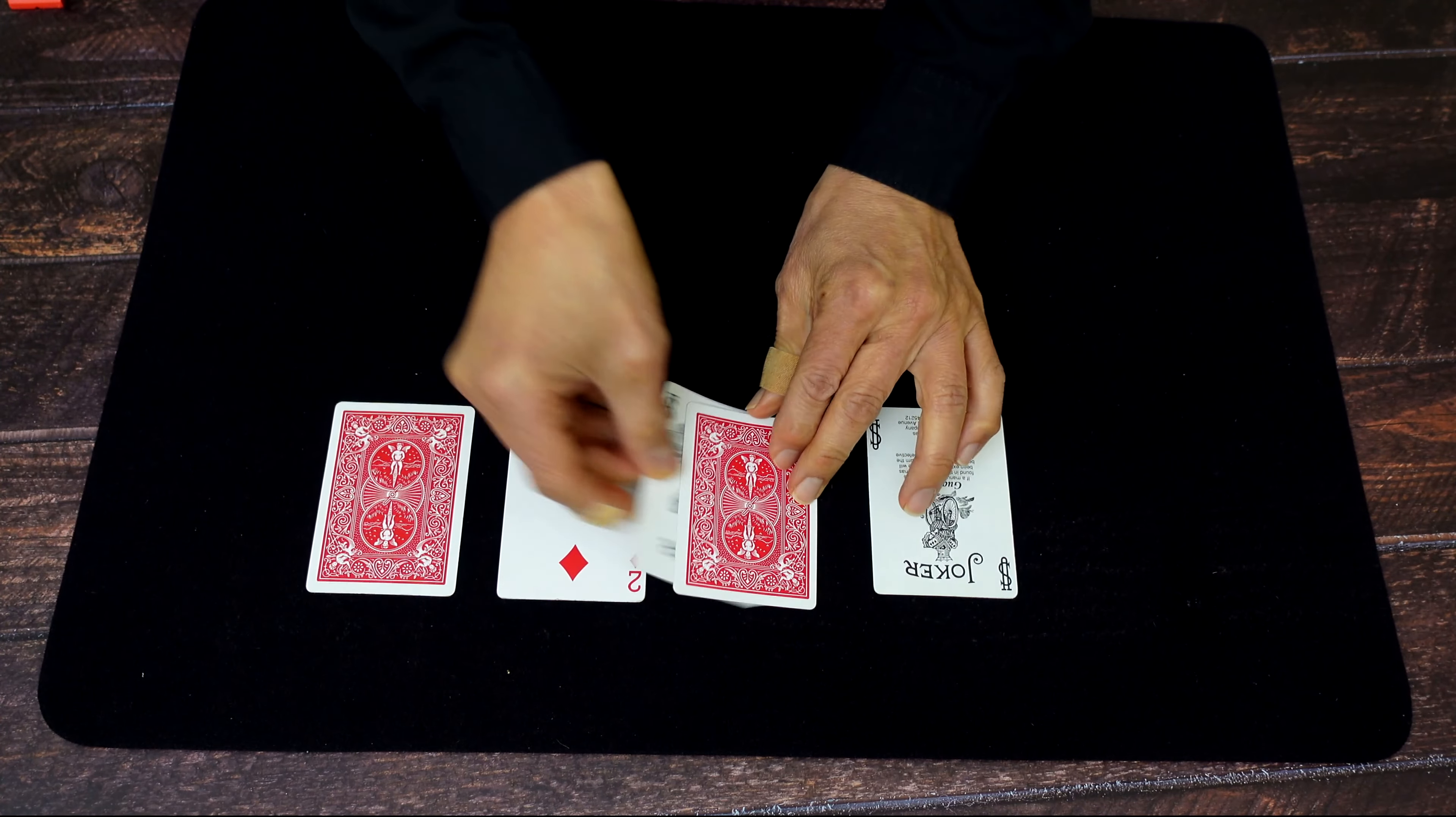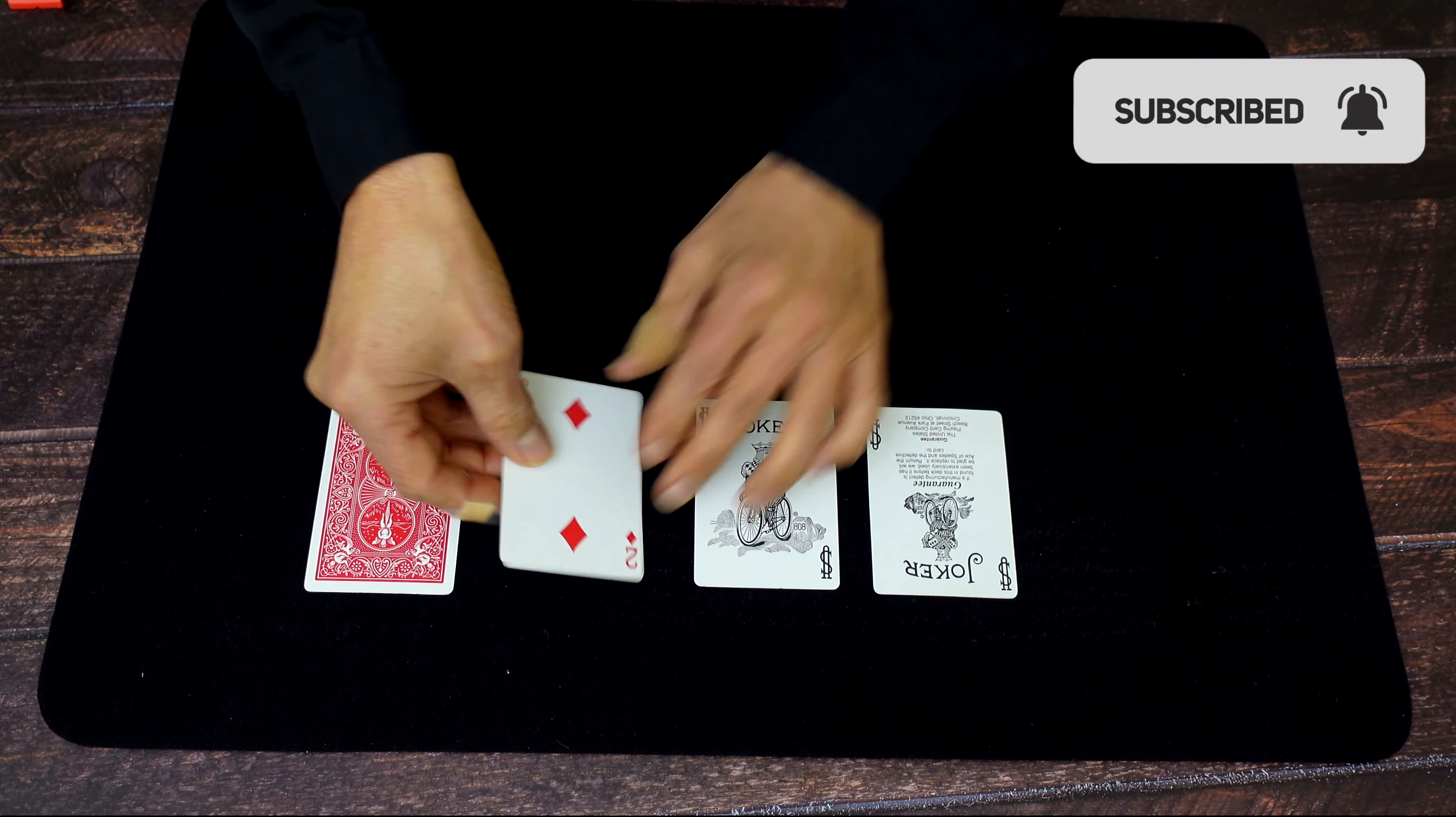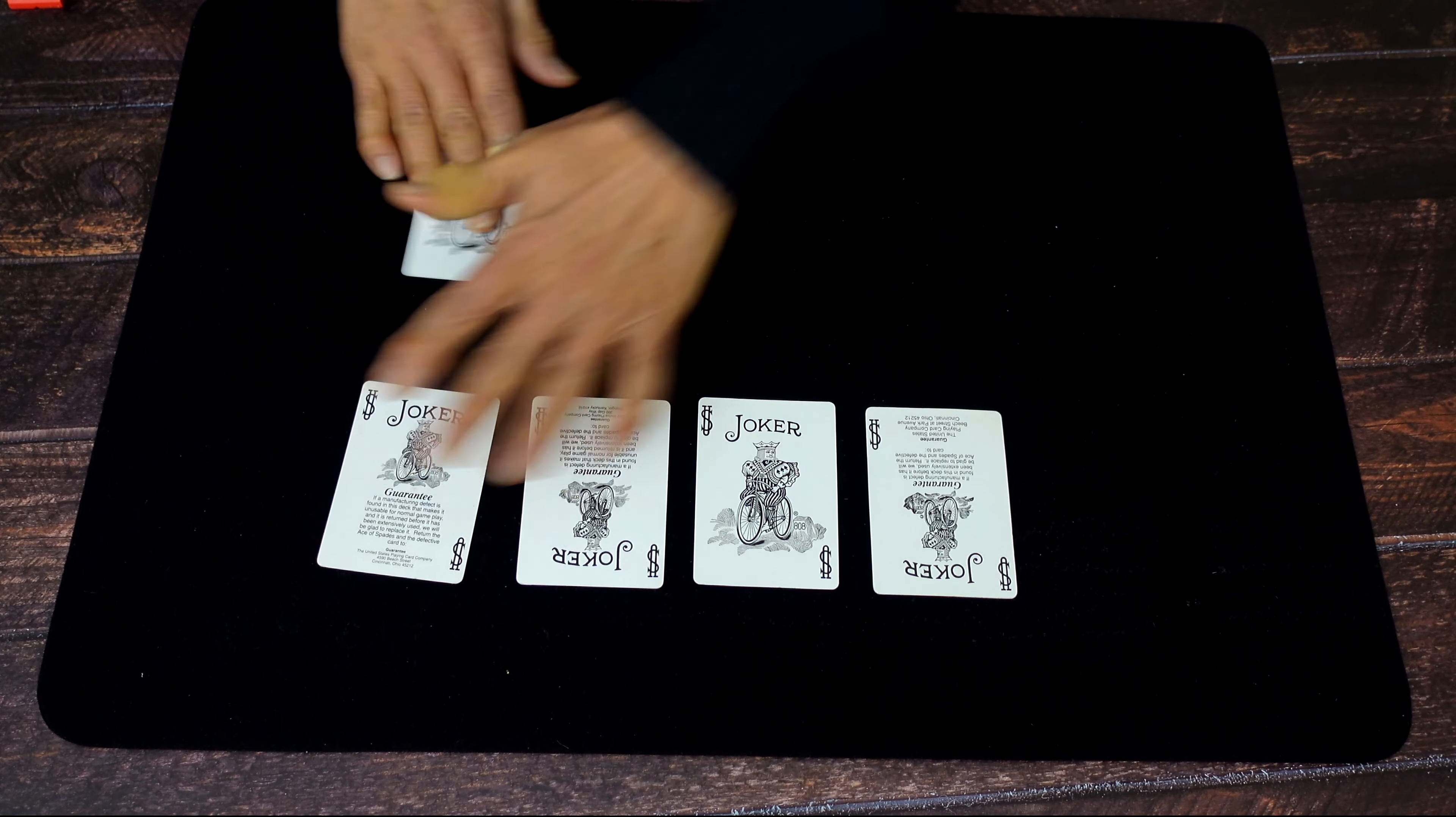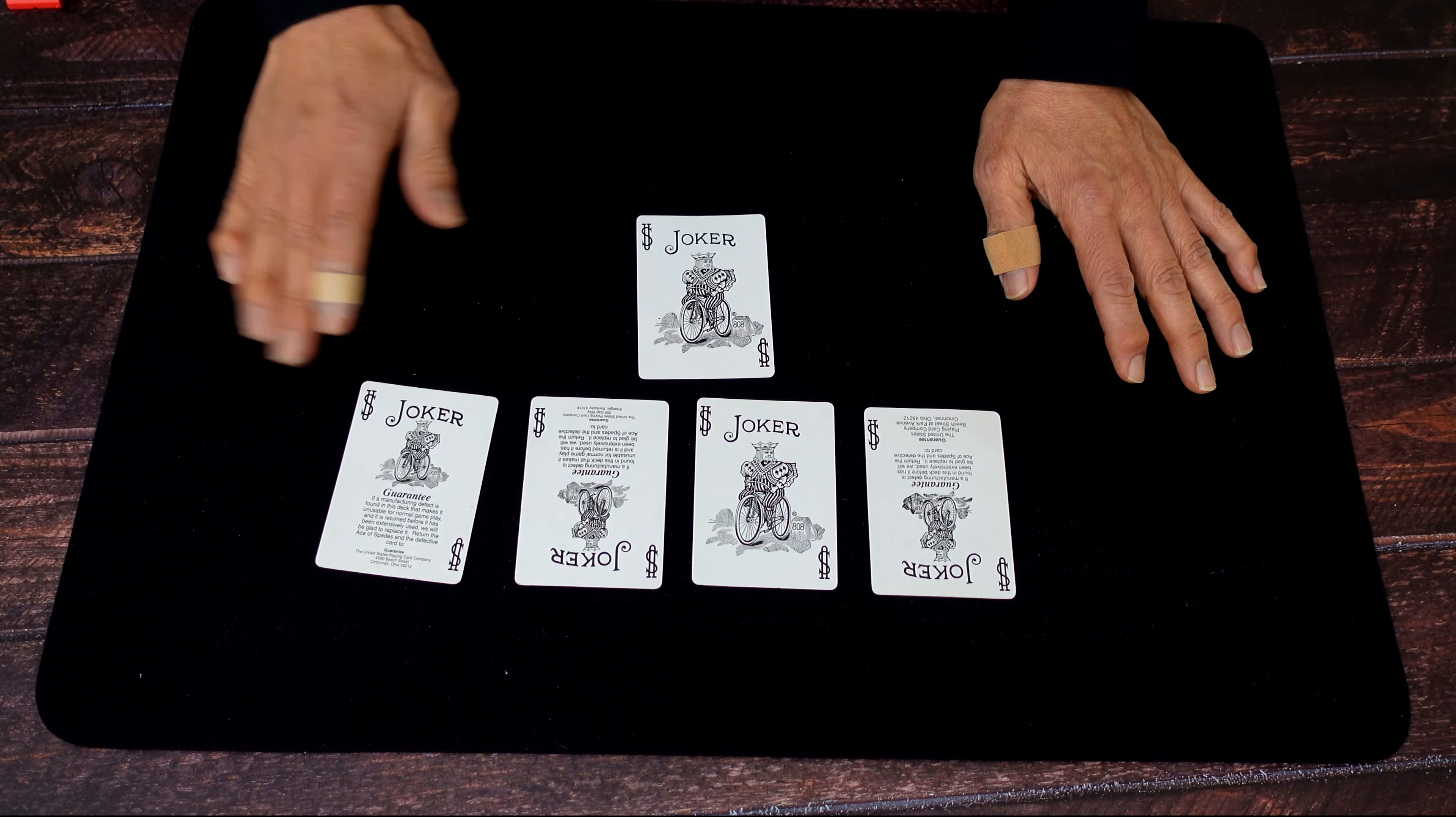Now this is just a regular card. You go under and turn it over and second Joker. This one's our gaff card, so you just place it under, turn it over, and one more, and you've turned apparently five cards into Jokers.